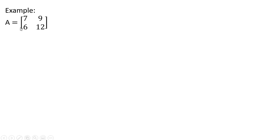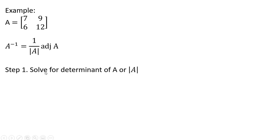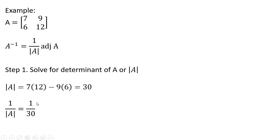Here's our 2×2 matrix — we want to find the inverse of it. Step 1: solve for the determinant of A. The determinant of A is going to be 7 times 12 minus 9 times 6, which equals 30. So 1 over the determinant is just 1 over 30. We've got half the formula done.